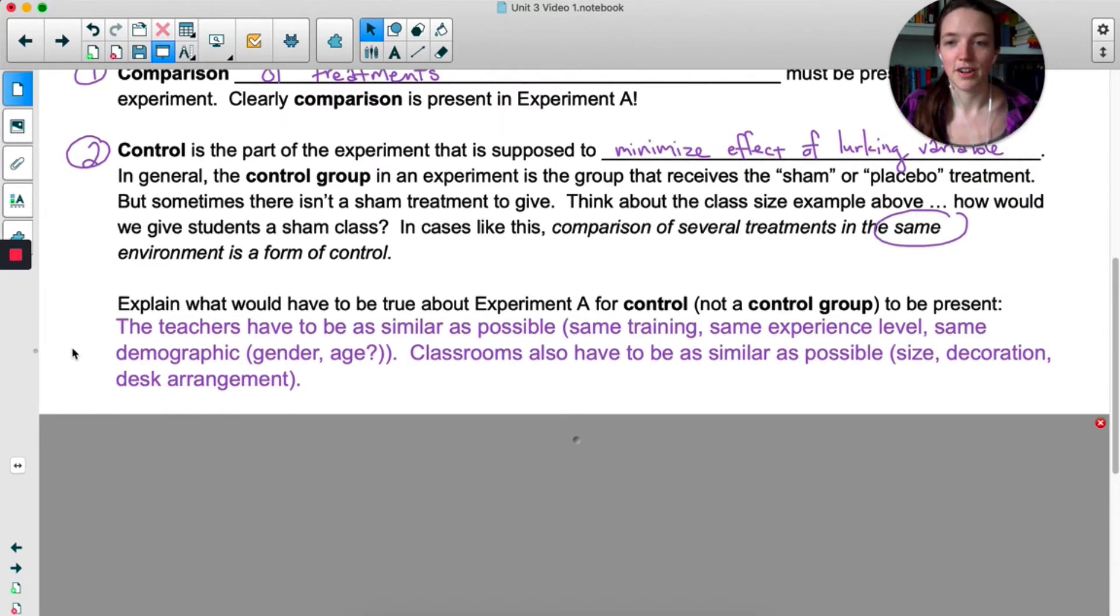Here are some things that I thought of. We want to make sure the teachers are as similar as possible. So we've got these three different classes with three different teachers. We want to make sure that those three teachers have similar training, have similar experience levels, right? We don't want one teacher to be brand new and one teacher to be like a veteran who's about to retire because we don't want one class to do better because they had a better teacher. We might also want to make sure the teachers are of the same demographic, same gender, age, etc.